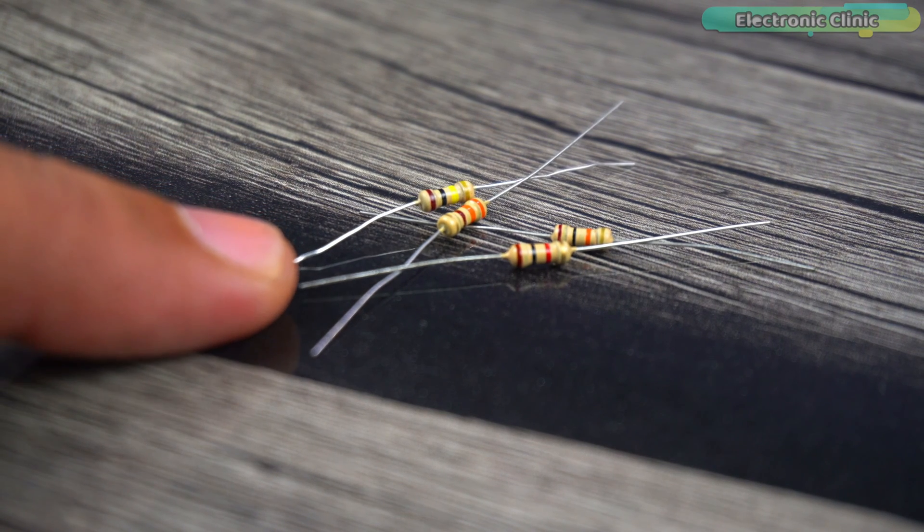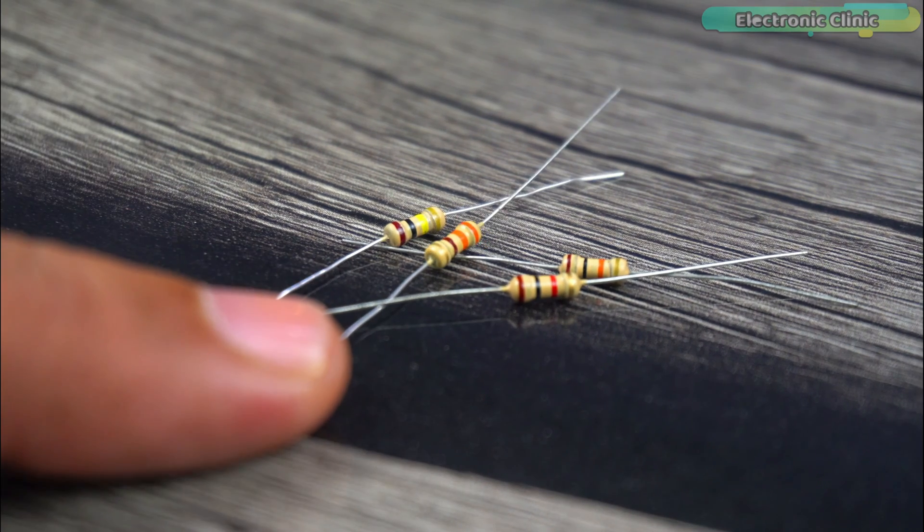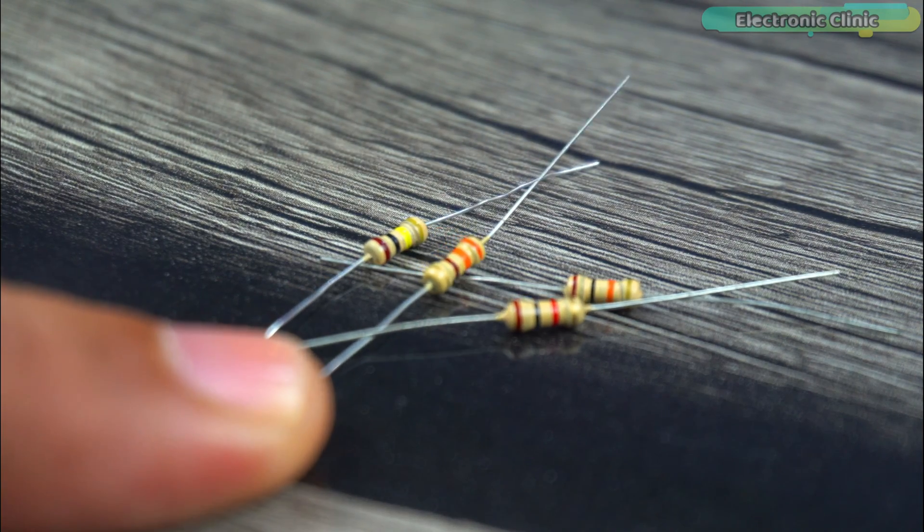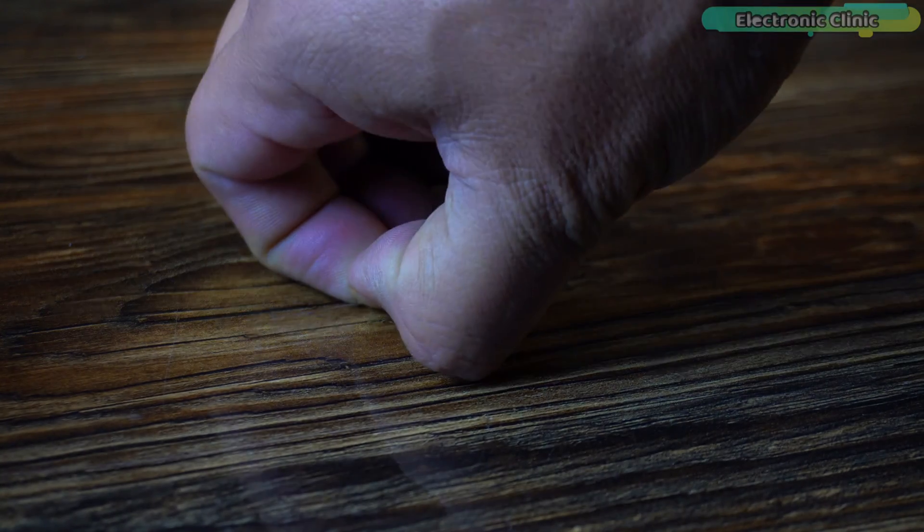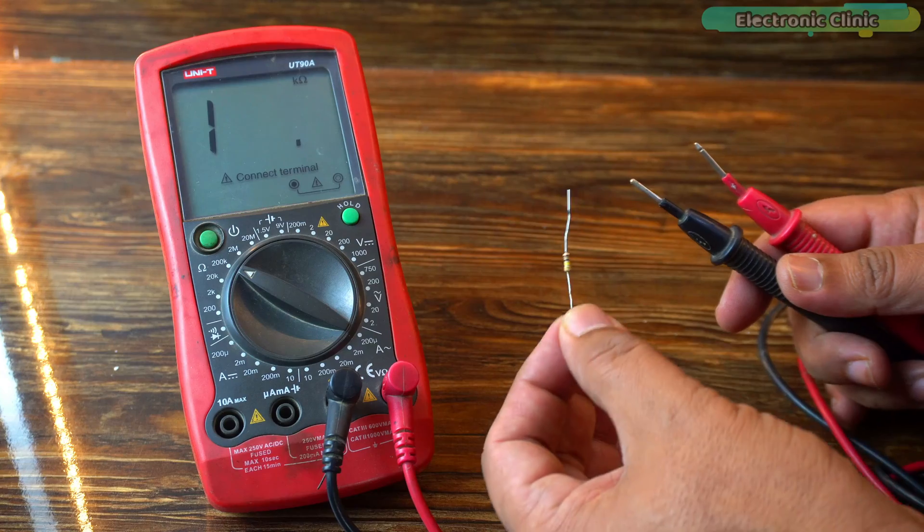It's like learning a secret code that helps you figure out the value of resistors. You might be wondering why not just use a digital multimeter to figure out resistor values. Multimeters are great but sometimes you don't have one handy.